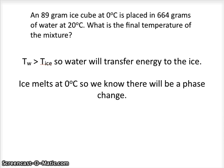Ice melts at 0 degrees Celsius, so we know there will be a phase change. As soon as the water starts transferring energy to the ice, the ice is going to start melting. Since we know the melting point of ice is 0 degrees Celsius, and that's our starting temperature, we know we're going to have to think about latent heat.